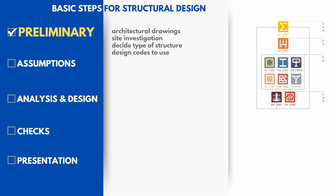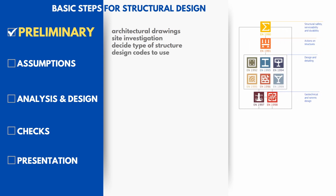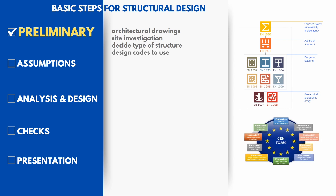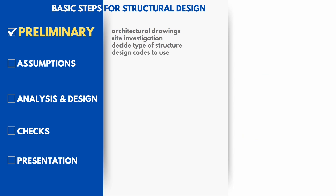As an example, apart from the basic structural design and loading codes, we might need to implement snow and wind loading codes, traffic loading codes, fire design, and seismic design codes. Once we have this information ready, we can proceed to the next stage.